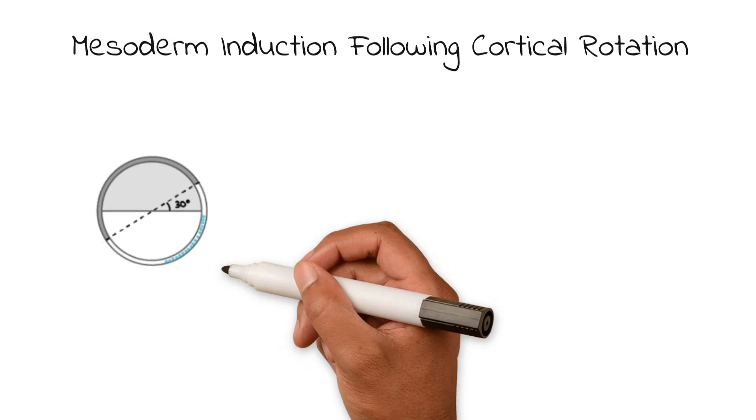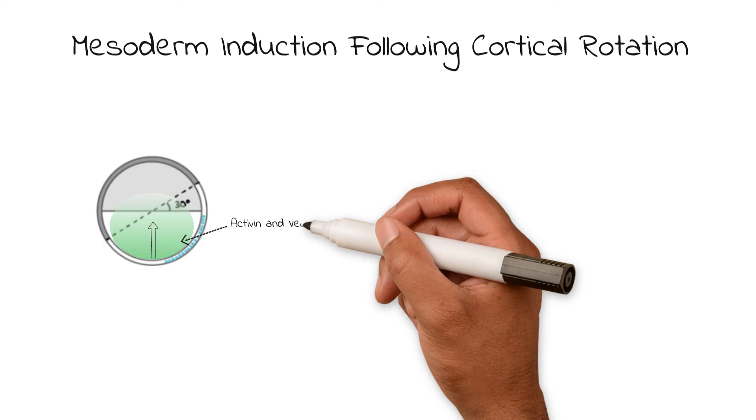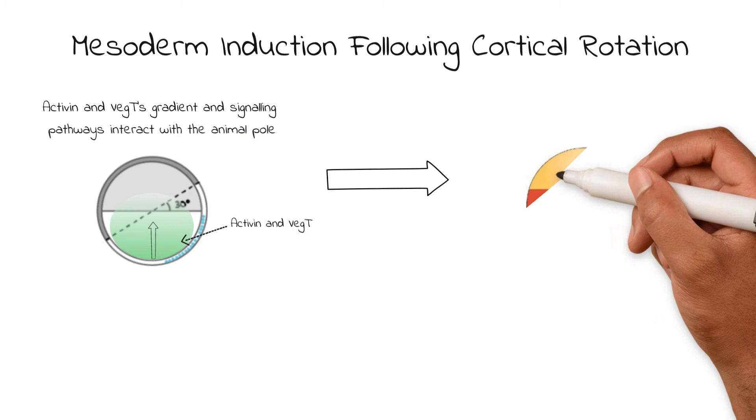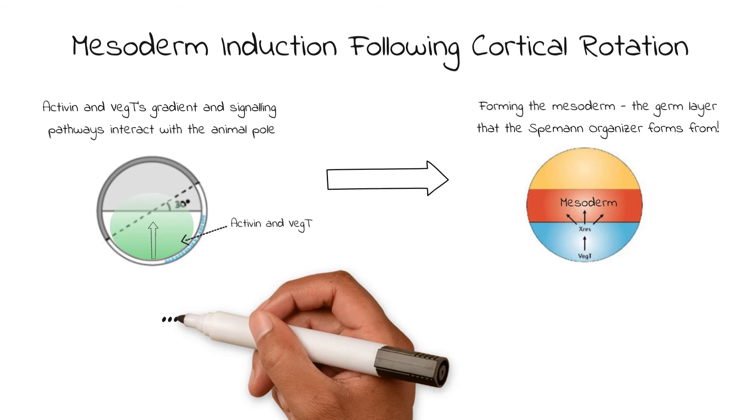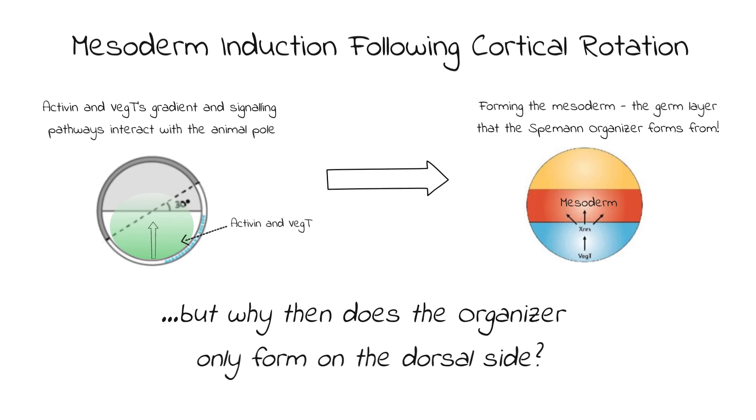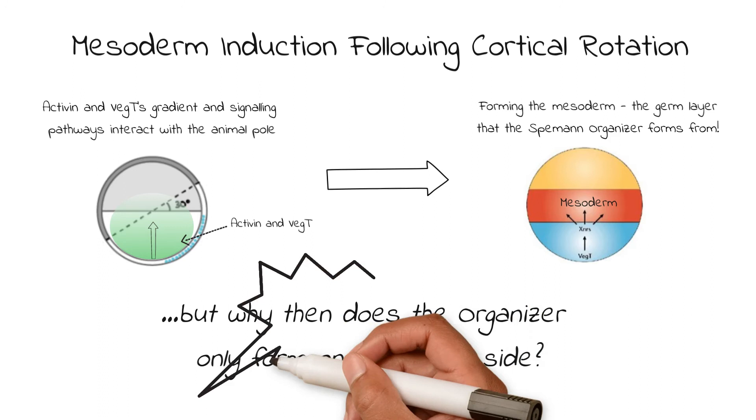Immediately following the cortical rotation, the egg's animal pole begins to interact with the vegetal pole. The vegetal pole contains a gradient of activin and VEG-T, two signal proteins that induce the creation of one of the germ layers of the embryo, the mesoderm, that the Spemann Organizer forms from. However, if you remember, the Spemann Organizer was only on the dorsal side of the embryo, so what makes the dorsal side's mesoderm different from that of the ventral side?